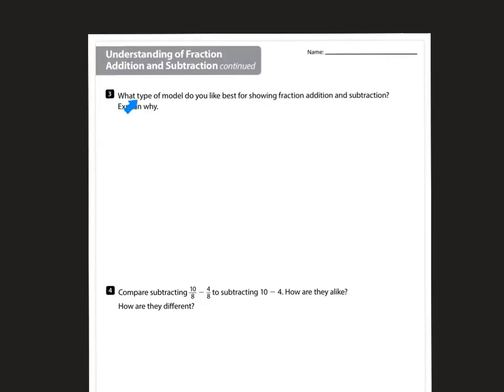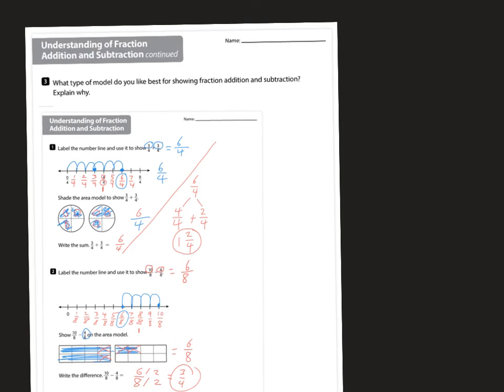Question number three. What type of model do you like best for showing fraction addition and subtraction? Explain why. All right. So which one do I like best? I would definitely say the number line. The number line to me is the easiest. Of course, if I were going to solve it on my own, I would definitely do it without a model and do it abstractly with a number sentence. But the number line to me is the easiest because it shows how many jumps you're taking and there's little error as long as you label it properly. There's little room for error.